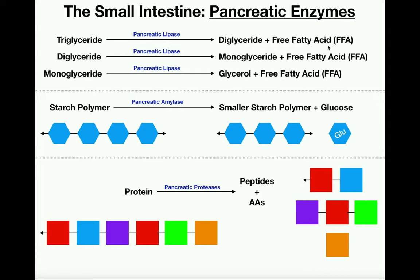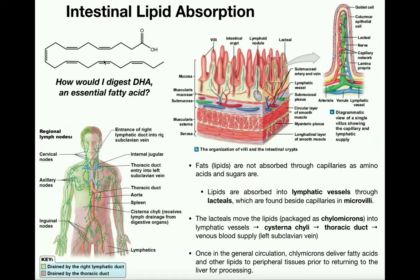Free fatty acids are lipids, and it turns out that lipids are going to be much more complicated to absorb than carbohydrates or amino acids. The focus of this video: how would I digest DHA, an essential fatty acid? It doesn't matter which fatty acid — DHA is a notable one with important anti-inflammatory functions. So, how would I absorb this fatty acid?